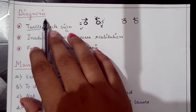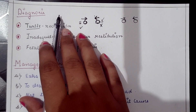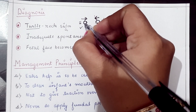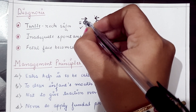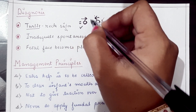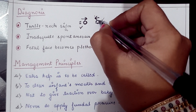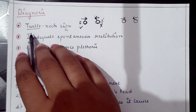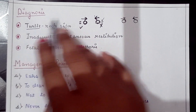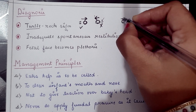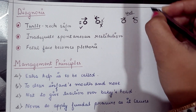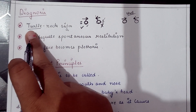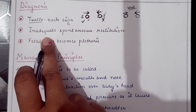Diagnosis of shoulder dystocia: the first sign is the turtle neck sign. The baby's head first comes out of the birth canal and the neck is visible, but if there is shoulder dystocia, the baby's head slightly retreats back into the birth canal and the neck is no longer visible. This is called the turtle neck sign because, like a turtle retracting into its shell, the baby's head moves back in.